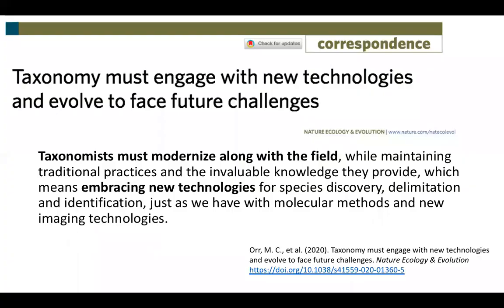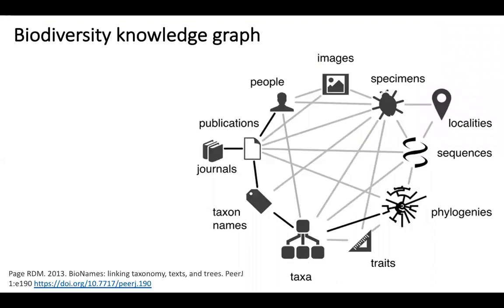I would like to start by bringing up this quote from a recent correspondence piece in Nature, Ecology, and Evolution by Orr and collaborators, where they describe ways in which taxonomic work should be moving with technological advances, just as molecular work has been doing. One of the ways we can think of bringing taxonomy up to speed with technological advance is by incorporating what is known as the biodiversity knowledge graph, which portrays the several pieces of information that are interconnected throughout the research that we do.